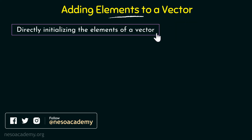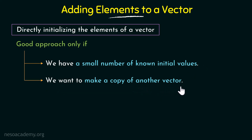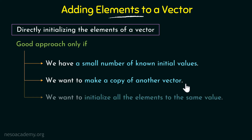While defining the vector itself we can directly initialize its elements, but this is a good approach only if we have a small number of known initial values. It is also a good approach if we want to make a copy of another vector that already exists. Additionally, if we want to initialize all the elements to the same value — which we saw in the previous lecture — we can do so by providing just the count followed by the initial value.